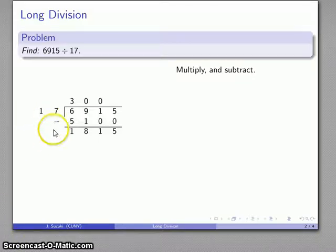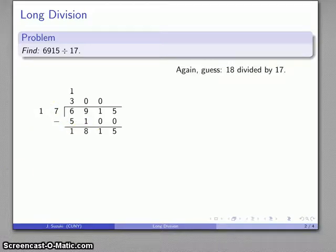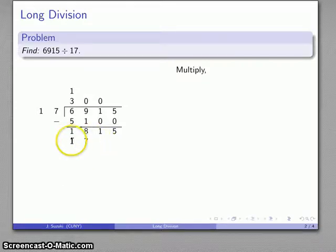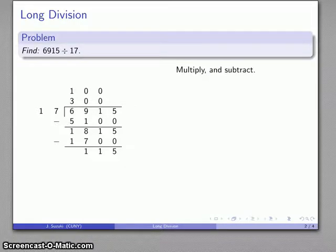Well, let's do that again. 17 into 18, well that goes about once. And again, 1 times 17 is 17, but again I'm not actually getting a 17 here. I'm actually getting a 1700, and to get that I need to go 100 times 17 to get me my 1700. And now I can do my subtraction to have 115 left over.